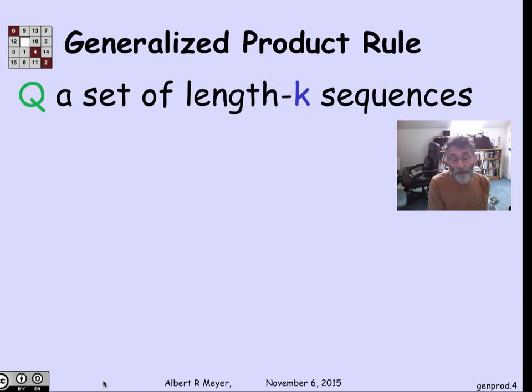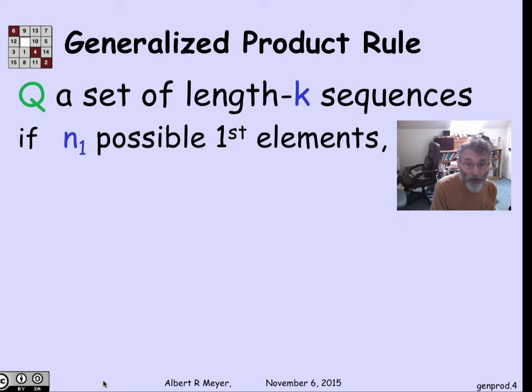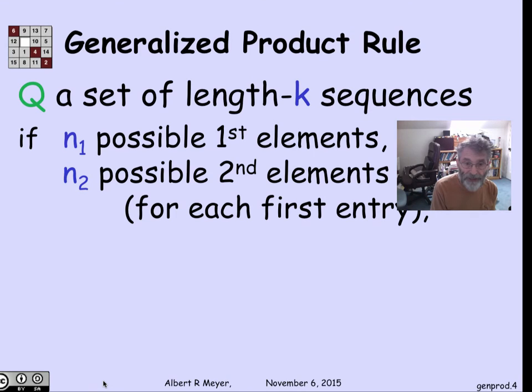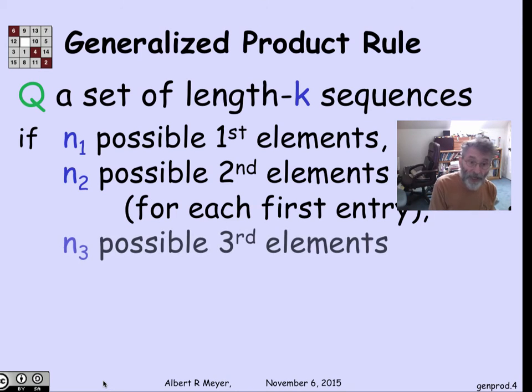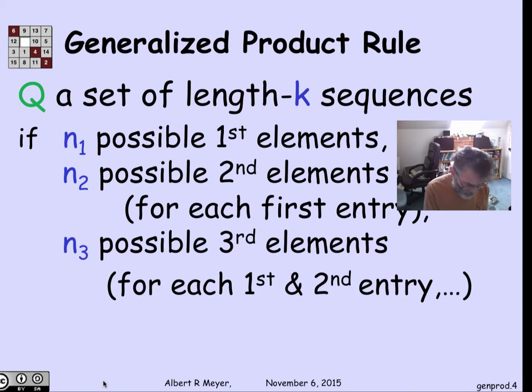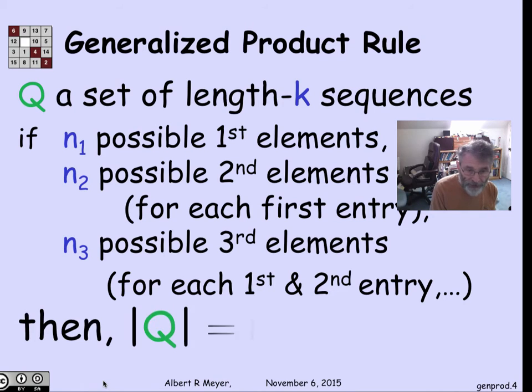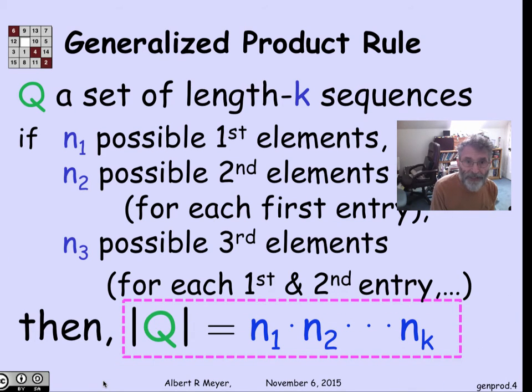The generalization applies in a straightforward way. If I'm interested in length k sequences and there are n1 possible first elements, n2 possible second elements for each first entry, n3 possible third elements for each of the first two entries, then the total size of these length k sequences without repeats is the product of n1, n2, through nk. That is the generalized product rule.